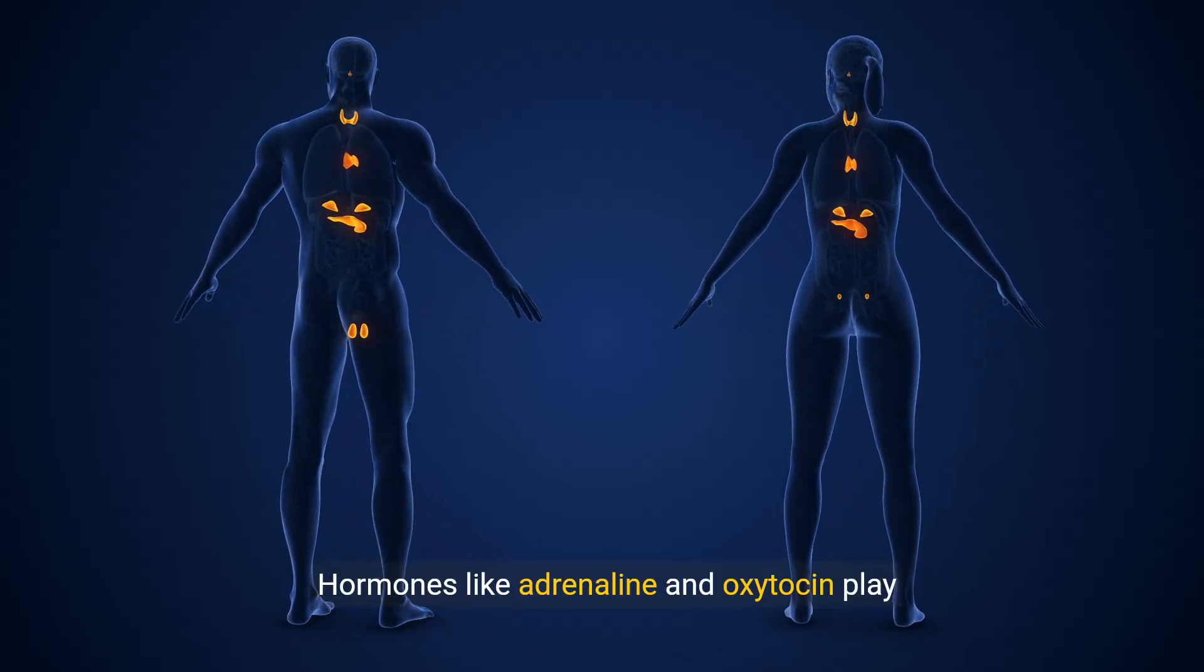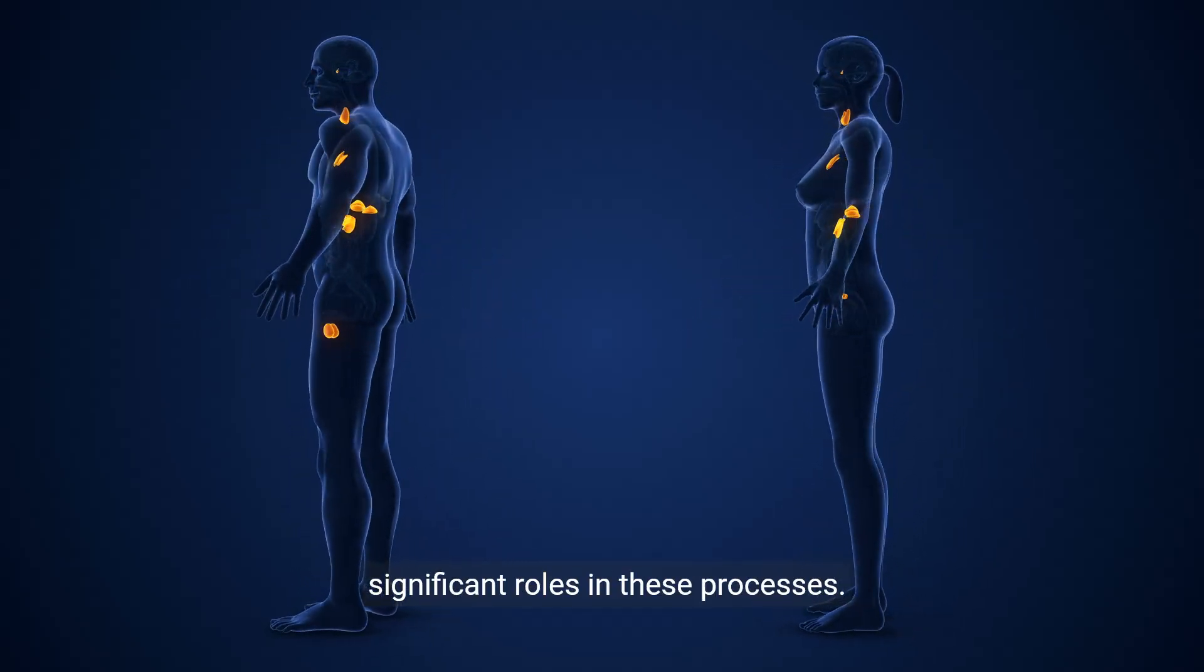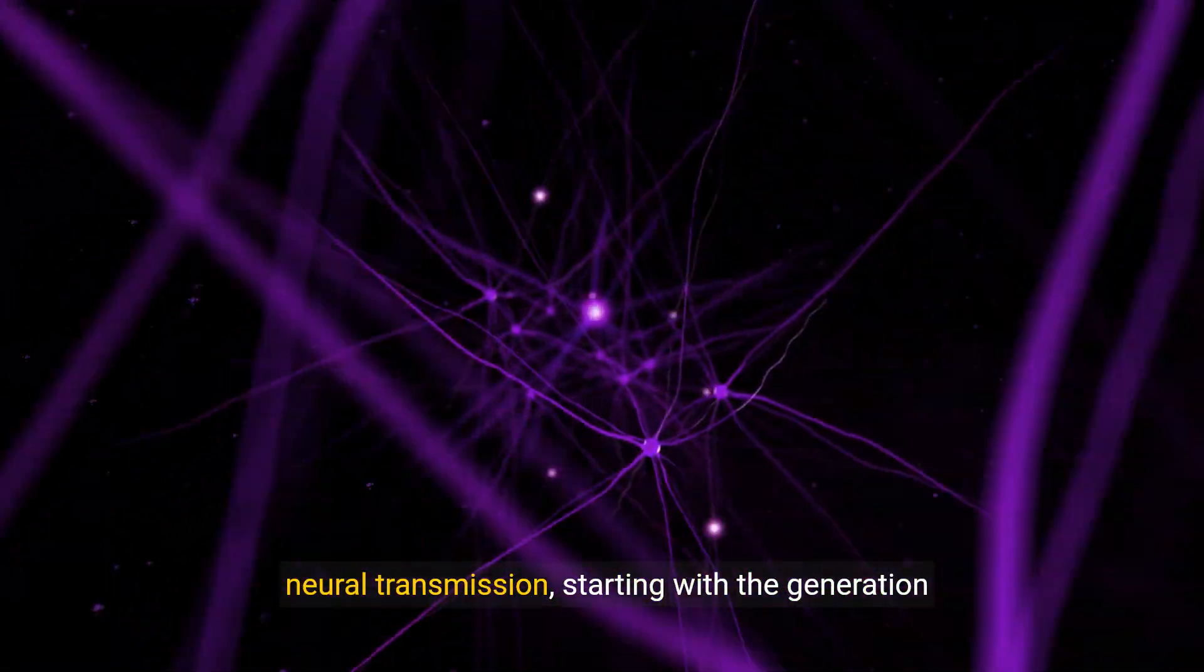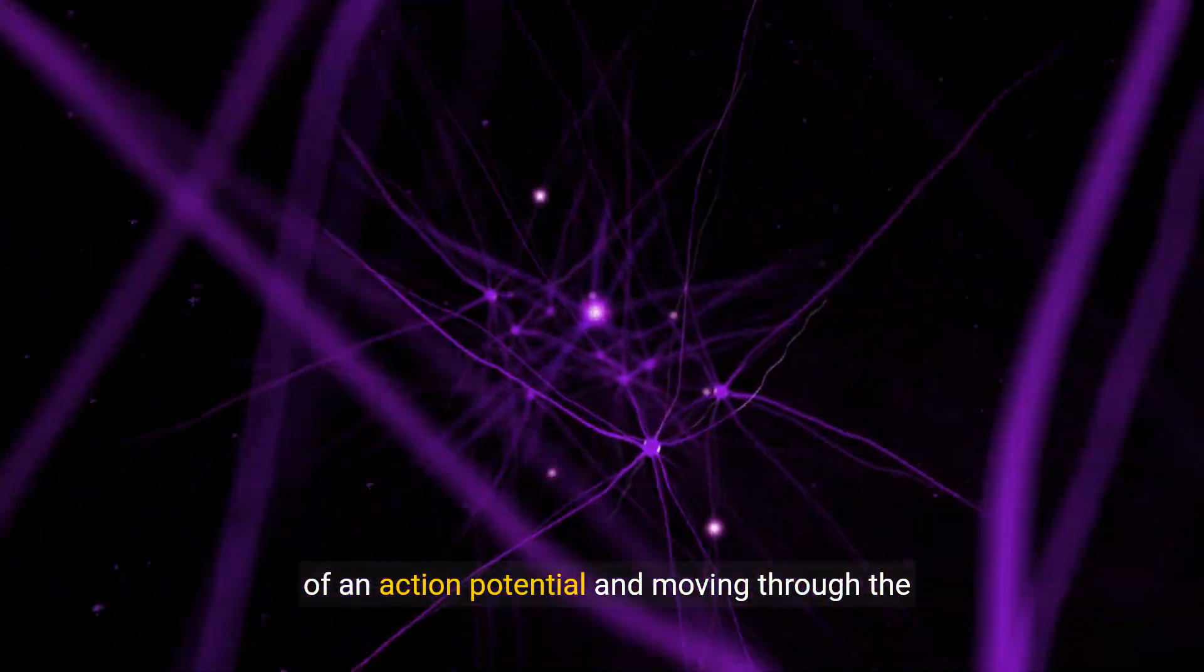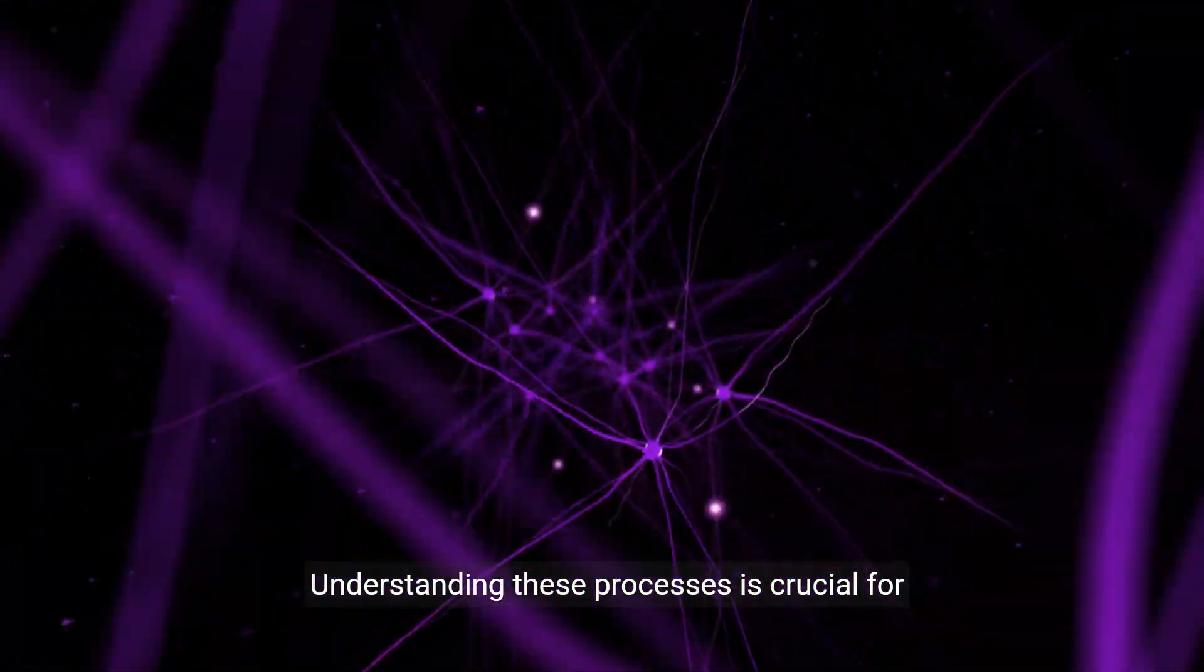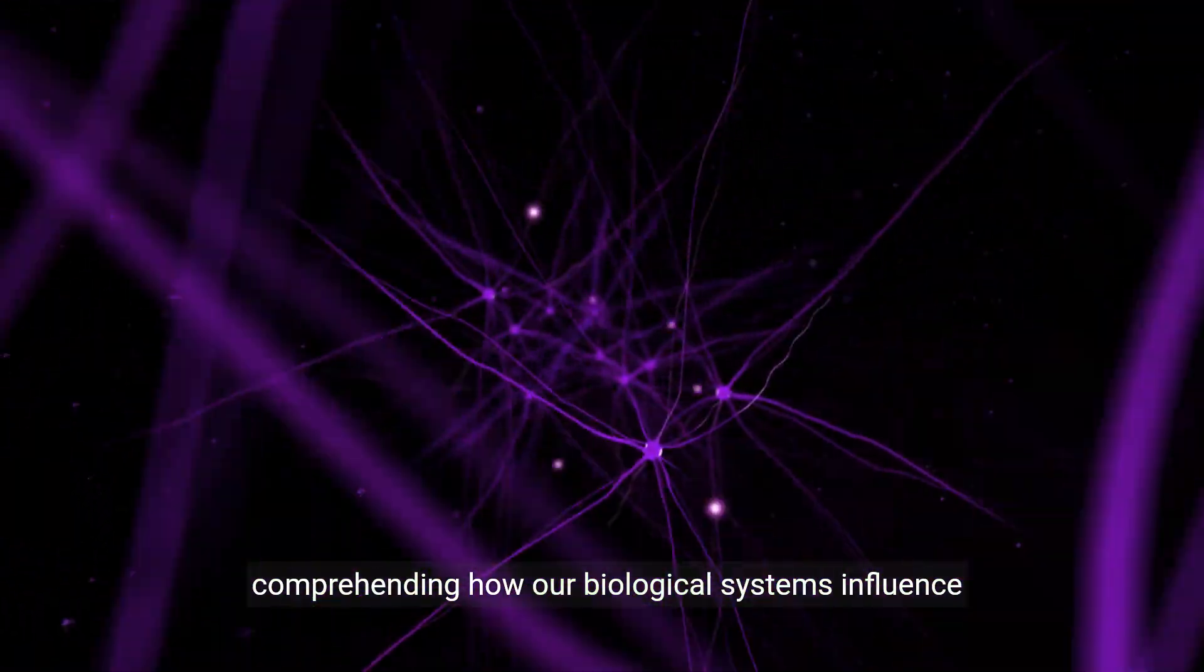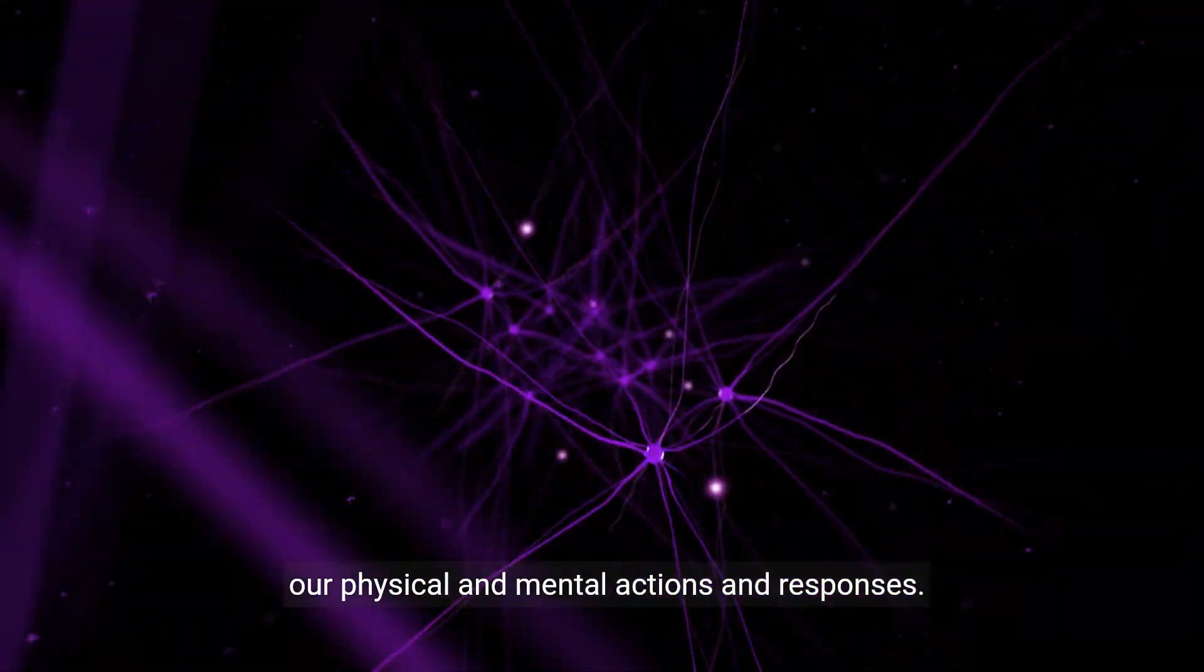In this section, we explored the basic process of neural transmission, starting with the generation of an action potential and moving through the roles of neurotransmitters and the endocrine system. Understanding these processes is crucial for comprehending how our biological systems influence our physical and mental actions and responses.